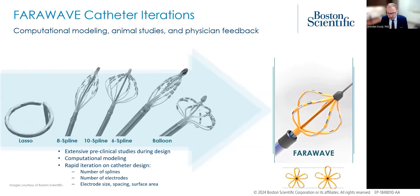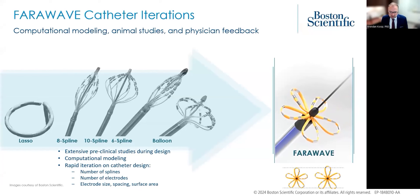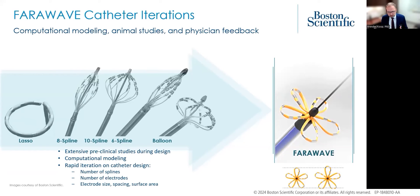The way this was done with Fairwave was with extensive preclinical studies during the design, a lot of preclinical studies, computational modeling, and rapid iteration on catheter design, both within Boston Scientific and after bringing in Fairpulse. We researched many different catheter designs, including a lasso-type design — with the difficulty that tissue apposition is hard to keep consistent with that form factor, and it's hard to connect crescent-shaped lesion zones. Once we moved to the basket form factor, which is ideal for PFA, we explored eight splines, ten splines, six splines, a version with a balloon, and eventually ended up with the design you see on the right — the Fairwave catheter.